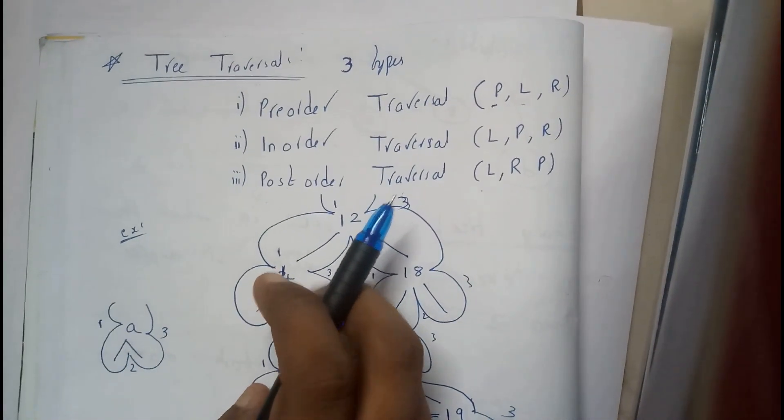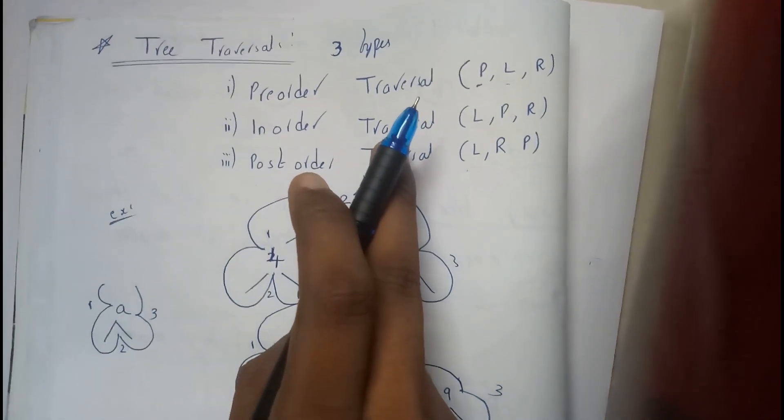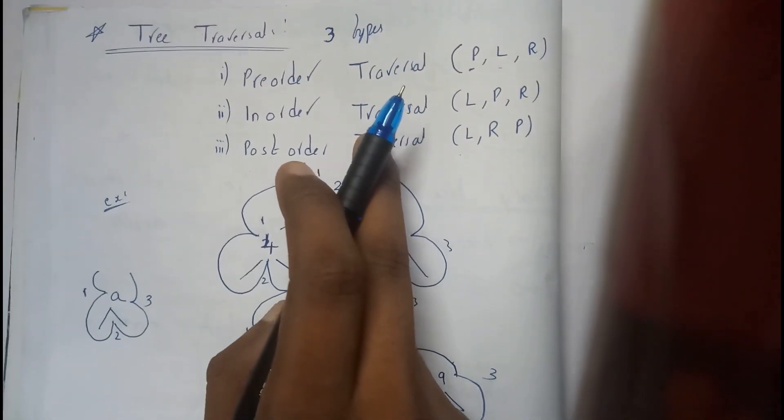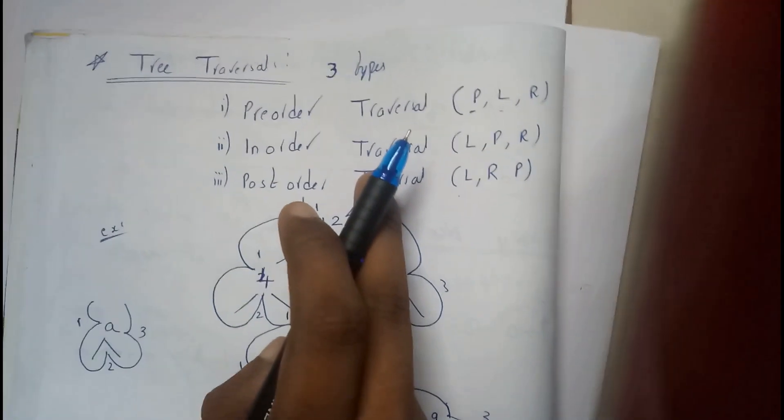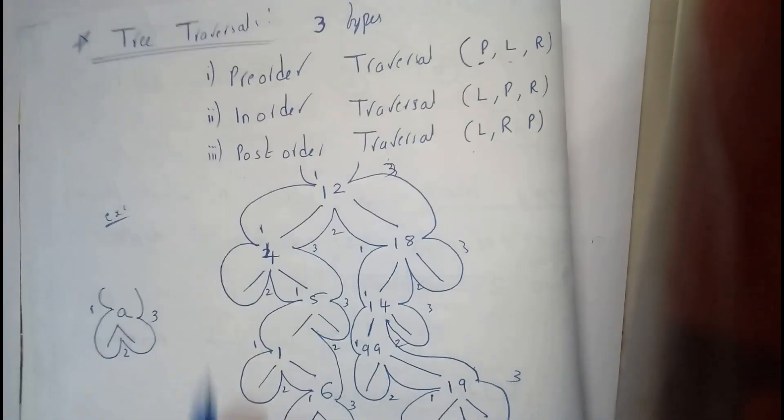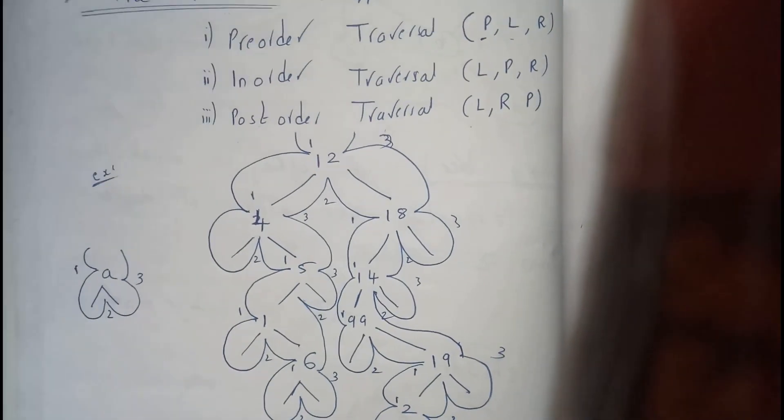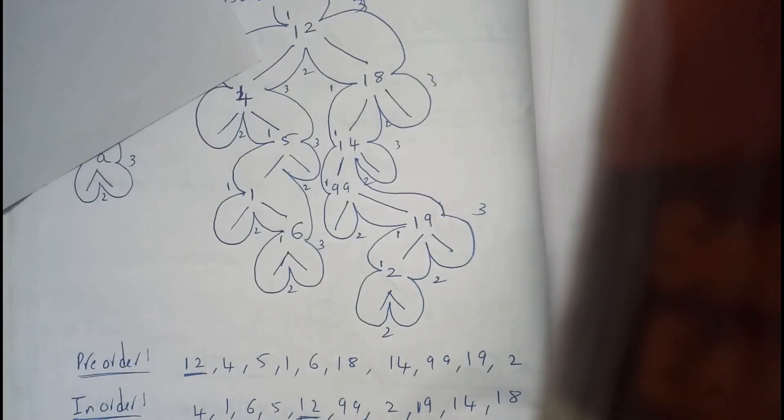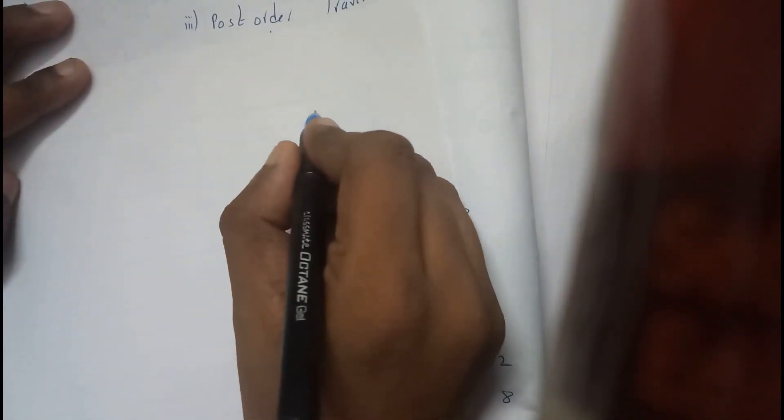I hope everyone got a small idea on what all these traversals are about. Whenever the question is given, a graph is given. Let's take an example—that could be the best way to do this.